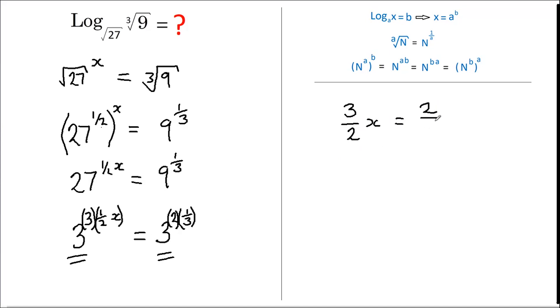And now if we multiply both sides by 2 thirds, this just becomes X, and this becomes 4 over 9.